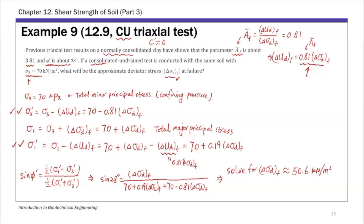So that is the CU triaxial test example, and that is how we calculate the deviator stress at failure.